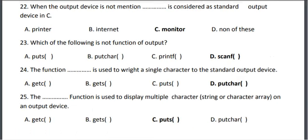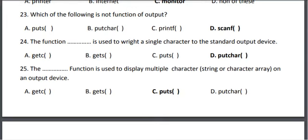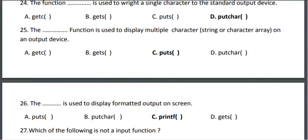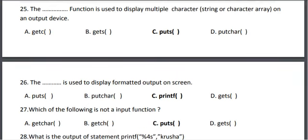Twenty-fifth, the puts() function is used to display multiple characters, a string or character array, on an output device. The correct answer is option C, puts.